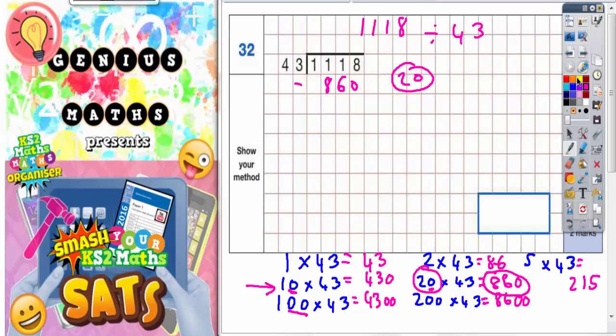So what we need to do now is do a little subtraction. So 8 take away 0 is 8. 1 take away 6 we can't do. So borrow 1 from this 1 and that becomes 0. And the 1 we borrow will make this into 11. 11 take away 6 is 5.